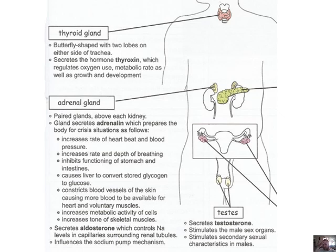Adrenaline increases the rate of heartbeat and blood pressure, so nutrients move faster. It increases the rate and depth of breathing so you get more oxygen, make energy quicker, and function faster. It inhibits the functioning of the stomach and intestines — only during full relaxation does the body digest food. So adrenaline stops all of that. After a big fright, you become extremely hungry; people give you sugar water to replenish the glucose used.